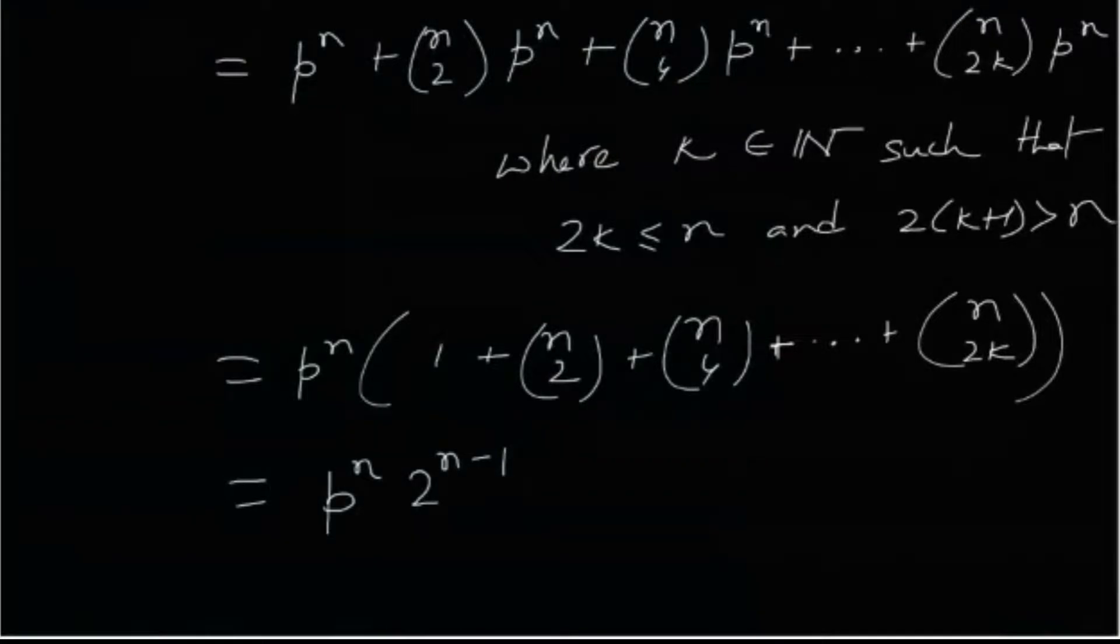Again, plus n choose 4 times p to the n and so on up to n choose 2k times p to the n. But k is a natural number such that 2k is less than equals n and 2 into k plus 1 is greater than n. That means 2k is the largest even integer less than equals n.